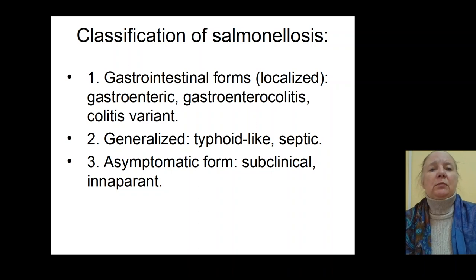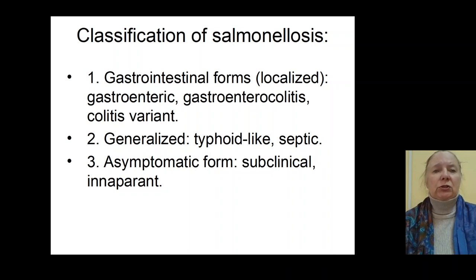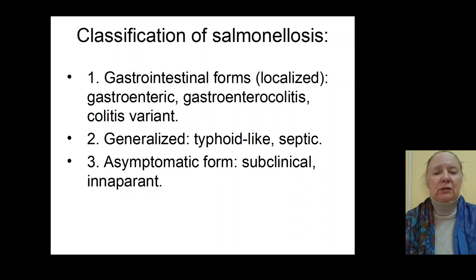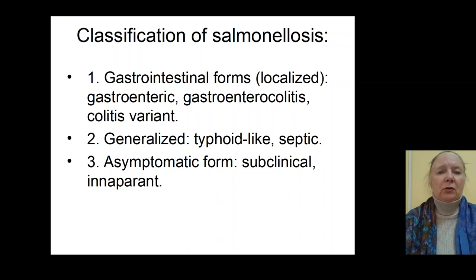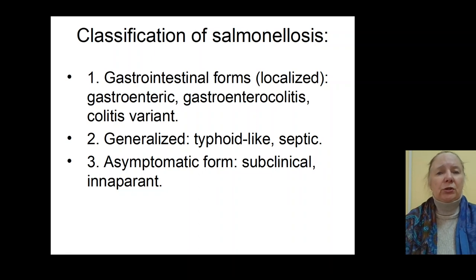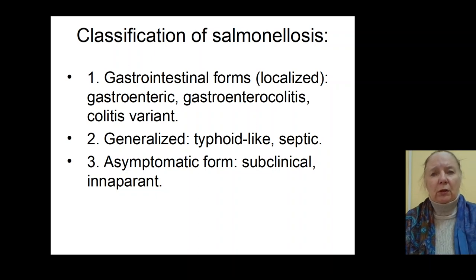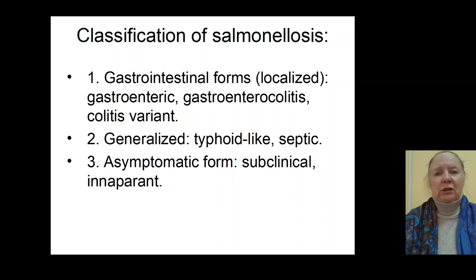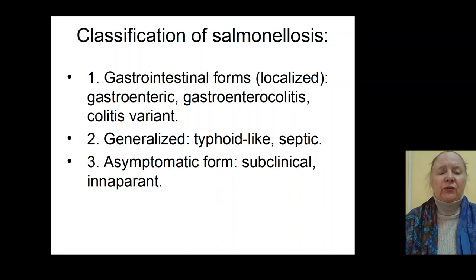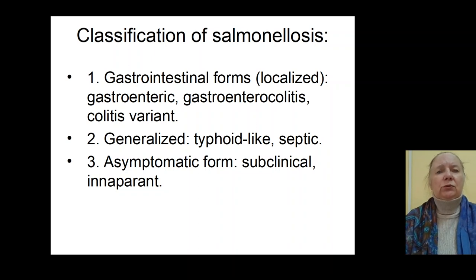The moderate form of the gastroenteric variant is characterized by increasing temperature more than 38 degrees and moderate intoxication. Syndrome of gastroenteritis — nausea, vomiting, and diarrhea (green, yellow) — occurs no more than 10 times per day. In moderate forms, there is sometimes a syndrome of dehydration, first and second stage of dehydration, with thirsty, sometimes tonic cramps, and decreasing turgor of skin.